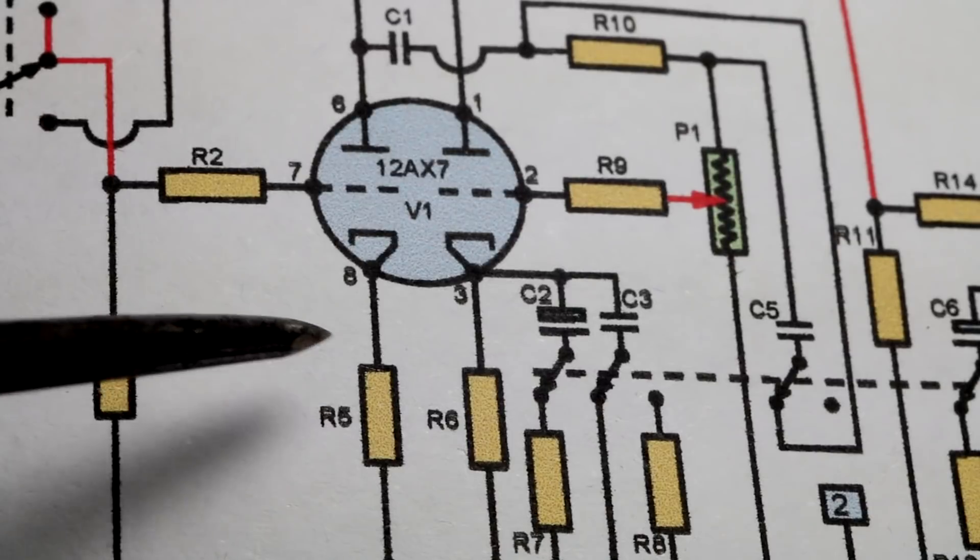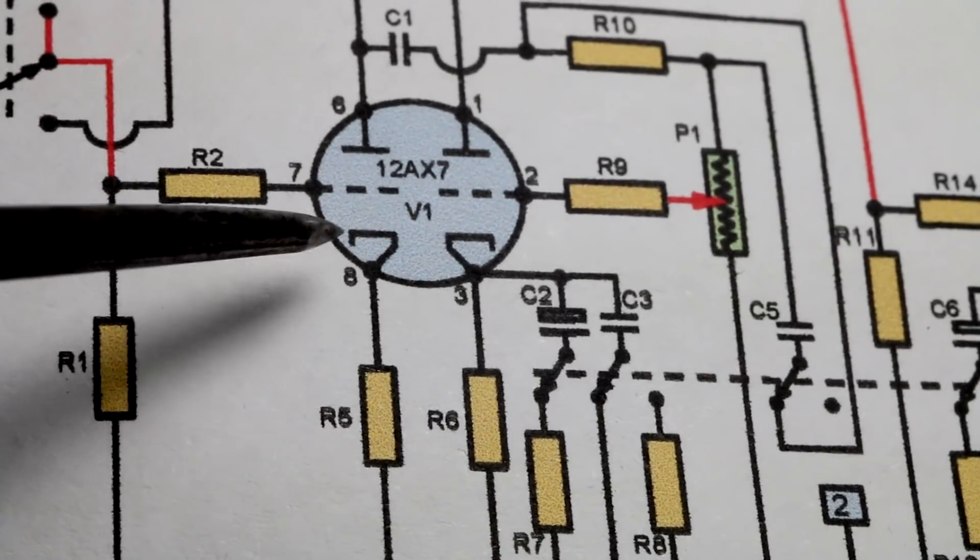Next we'll do pin 8, which has only got resistor 5 that's connected to it.